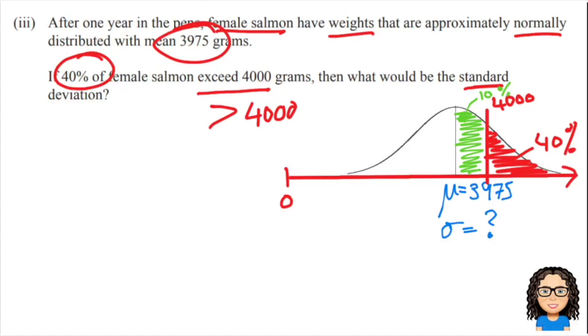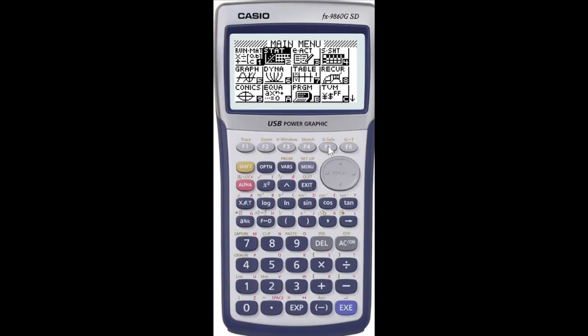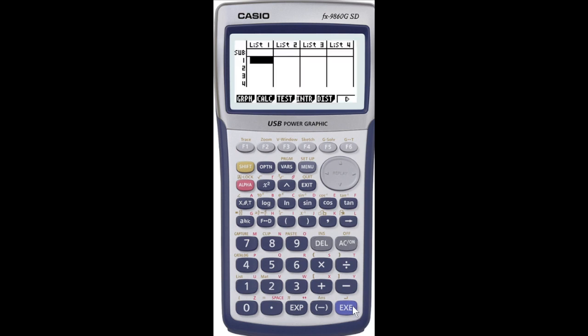So there's two methods I can use to solve this. I can either use the graphics calculator or I can use the probability tables. So let's show you both, and we'll start by doing the graphics calculator. Let's go into our statistics mode again. Press that, execute. And again I want my distribution, so F5. Then I want my normal distribution, so F1. And in this case I'm actually going to go for my inverse normal, so F3.